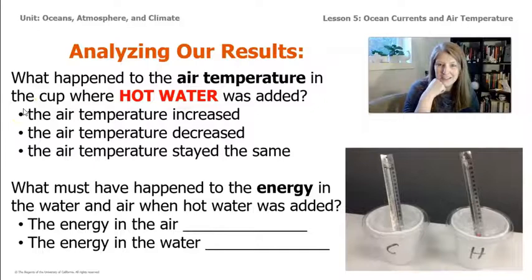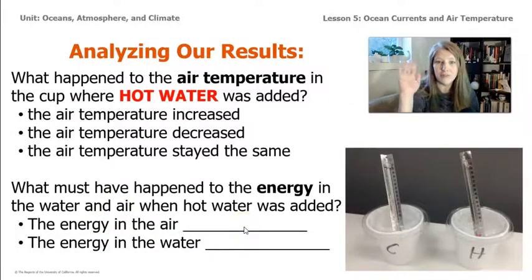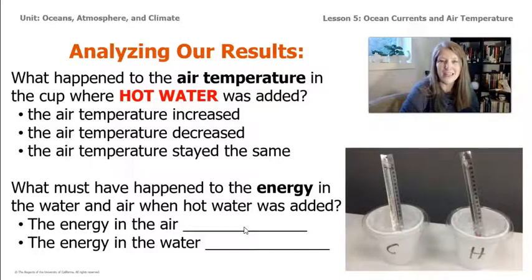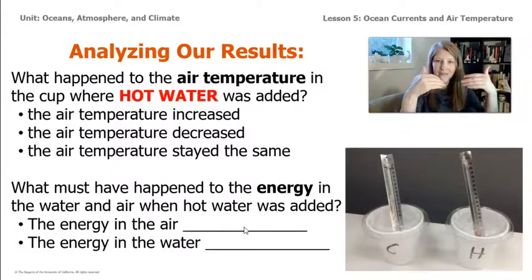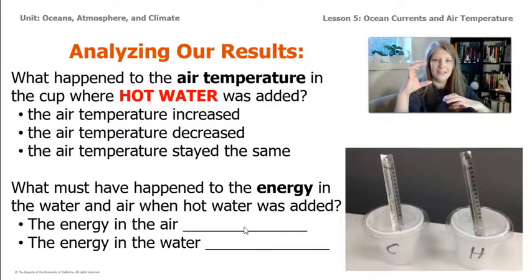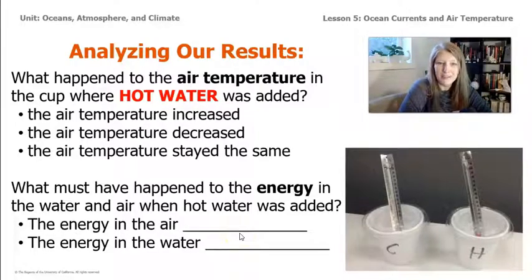What does that mean about the energy? If the temperature goes up, we know that the molecules of air are moving faster and have more kinetic energy. We didn't take the temperature of the water before and after, so we can't say if the water's temperature went up or down. But we know it's a closed system — all the energy in the system has to stay in it. Energy doesn't come in from somewhere else or go out. So if the temperature of the air was increasing, it was getting that kinetic energy from the water. The water was transferring energy to the air, which means the temperature and the energy amount in the water actually went down.